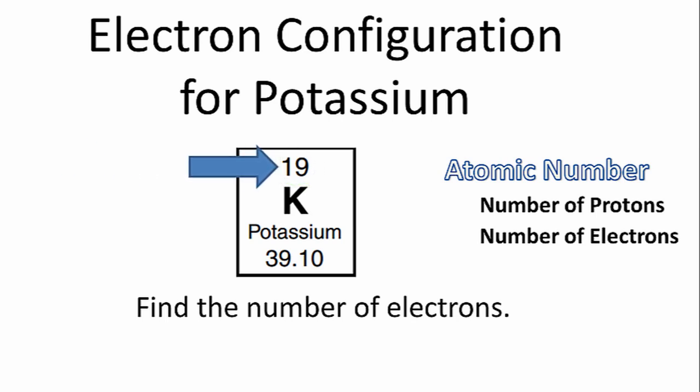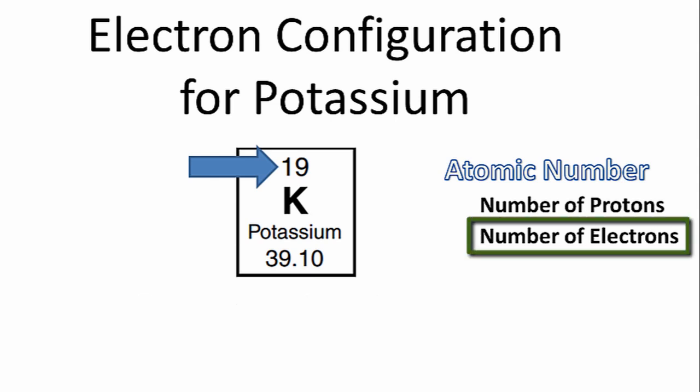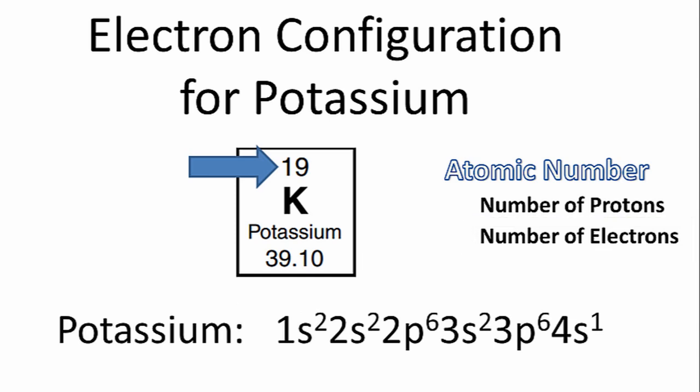It tells us the number of protons, but it also tells us the number of electrons. And once we know the number of electrons, we can write the electron configuration for potassium.